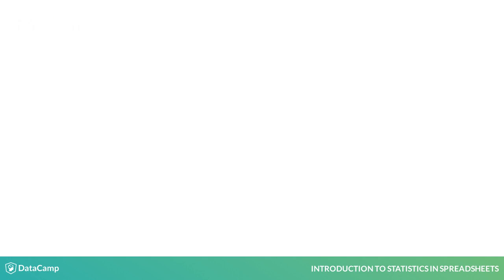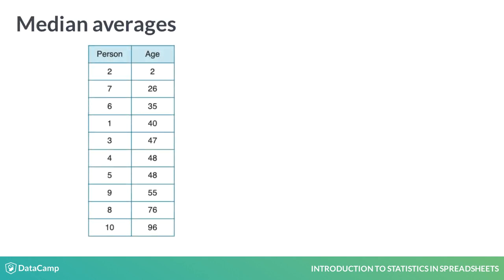Another average is the median. The median is the middle number of a dataset. When sorted from smallest to largest, half the numbers are less than the median, and half the numbers are above the median.